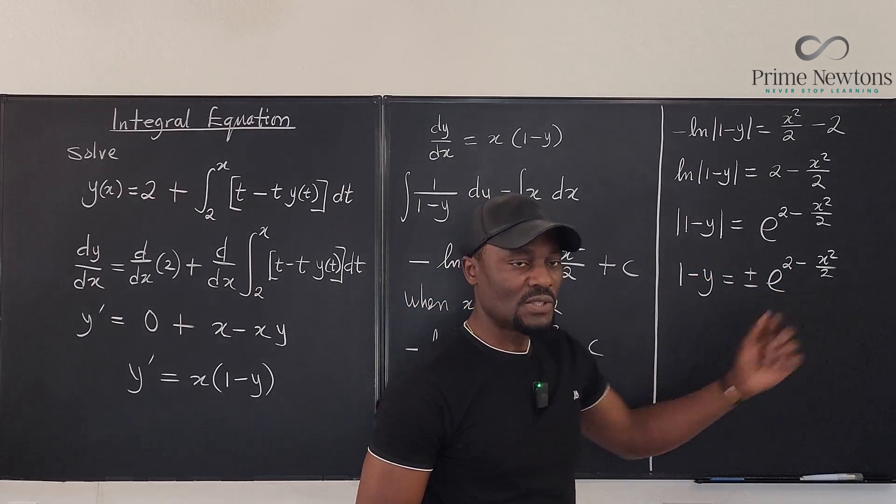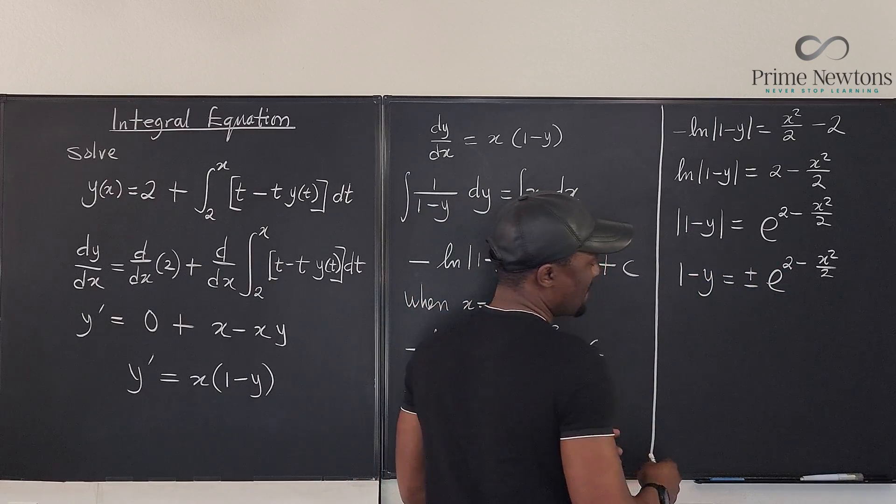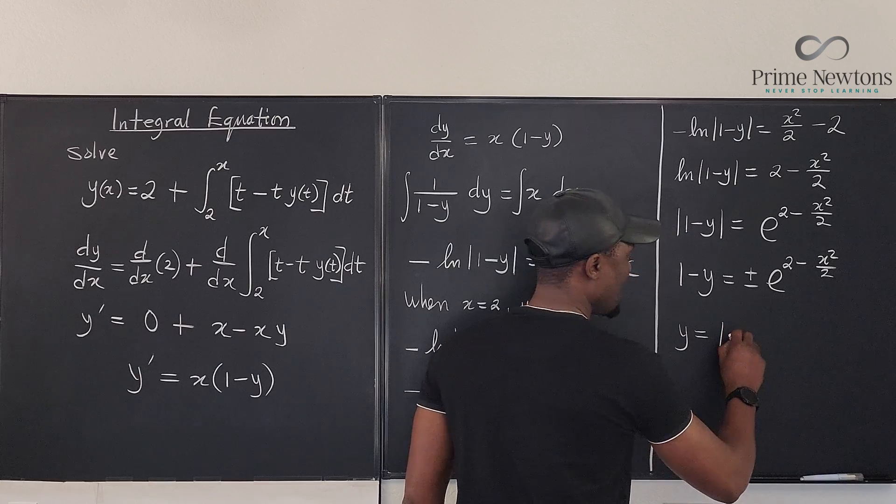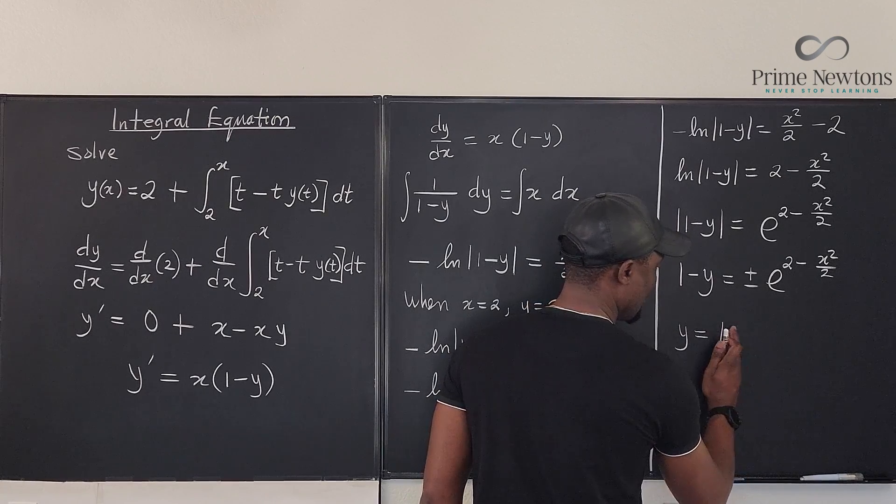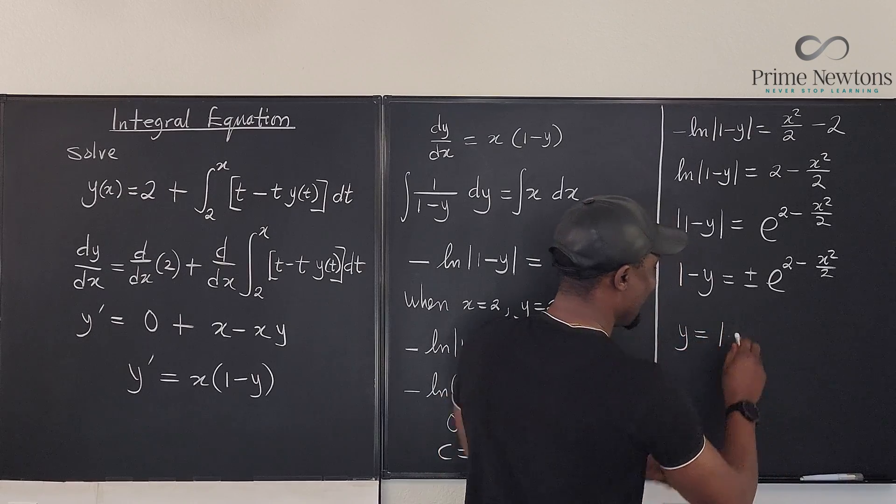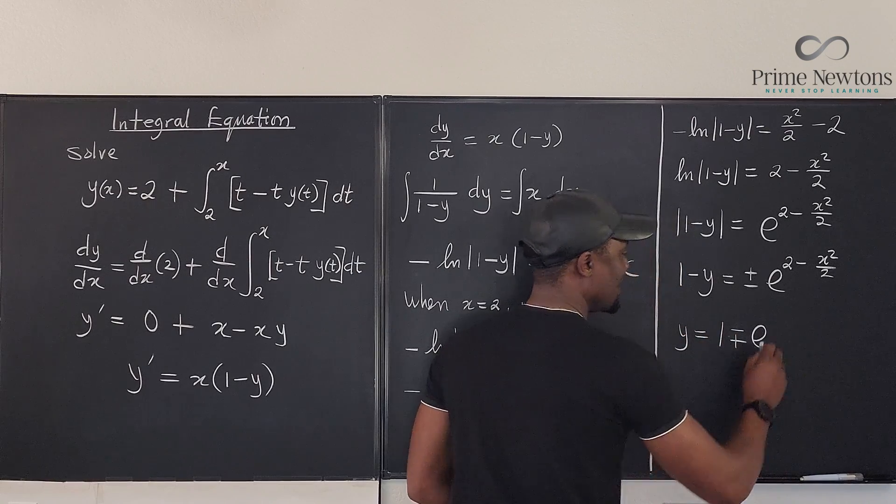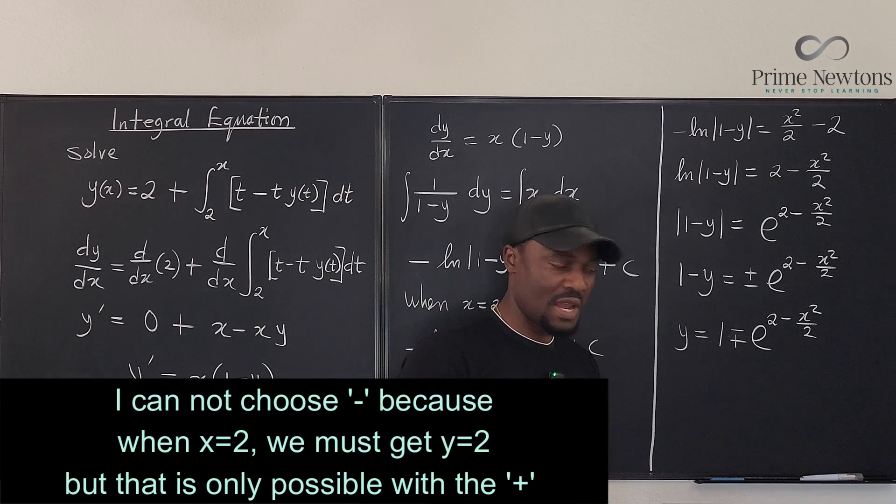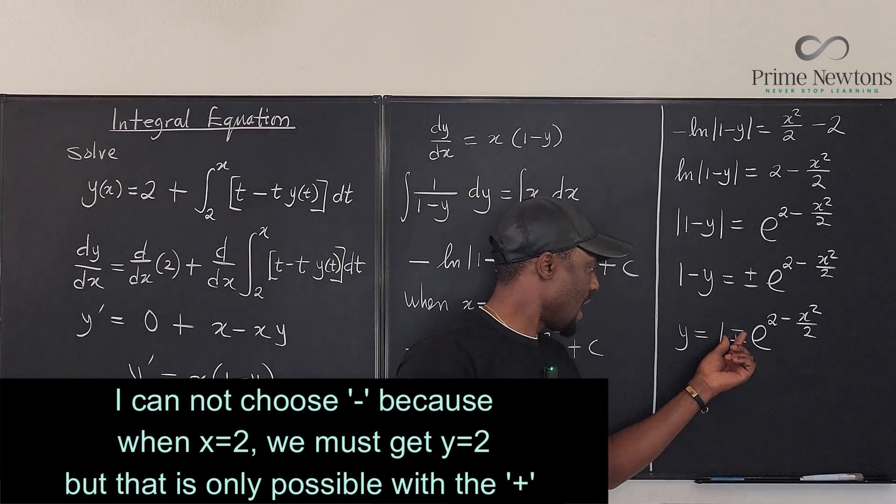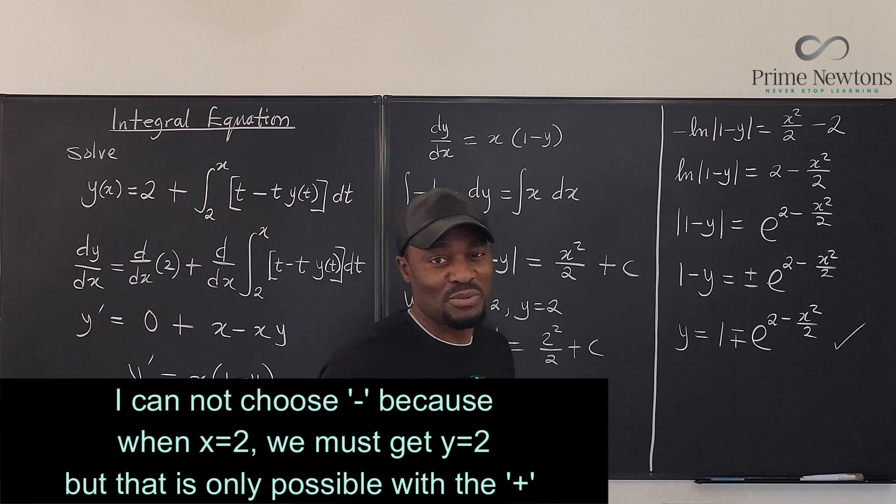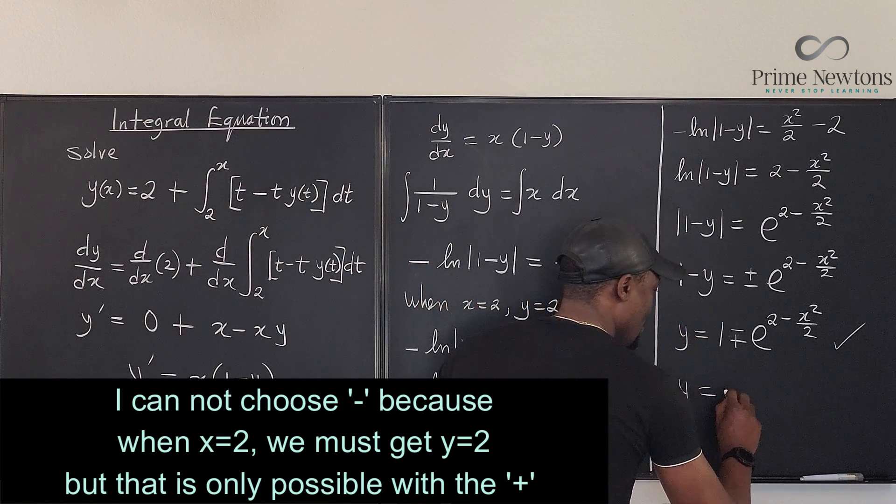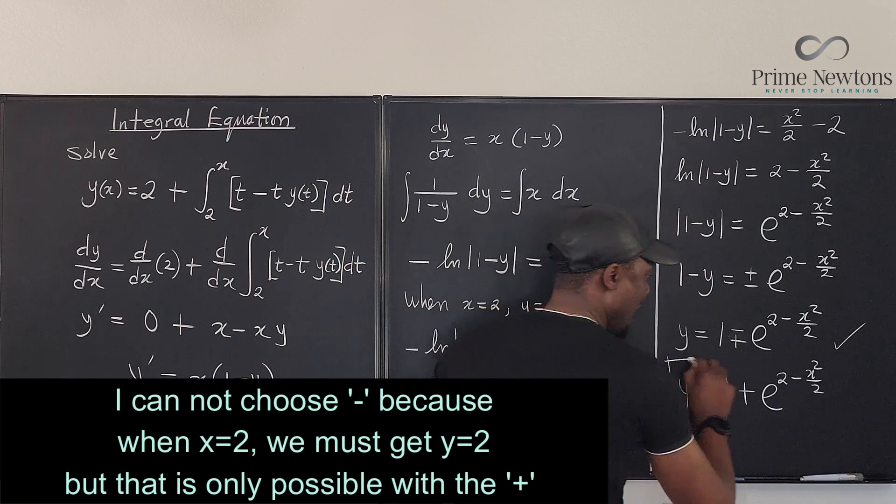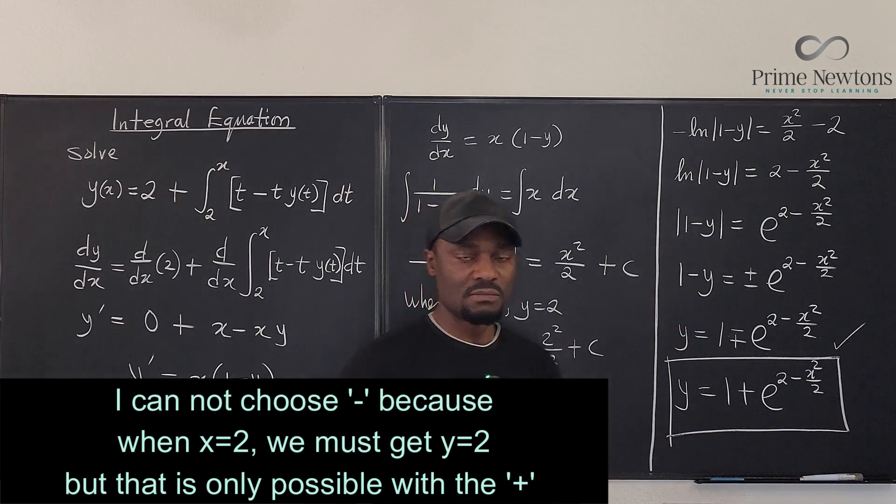Let's isolate y and move this over to the other side. We're going to have y is going to be 1 minus or plus e to the (2 - x²/2). Well, I can leave my answer this way. Do I have to choose between plus or minus? I cannot choose minus because when x equals 2, we must get y equals 2, but that is only possible with the plus. So it's y equals 1 plus e to the (2 - x²/2). And that is the solution to this integral equation.